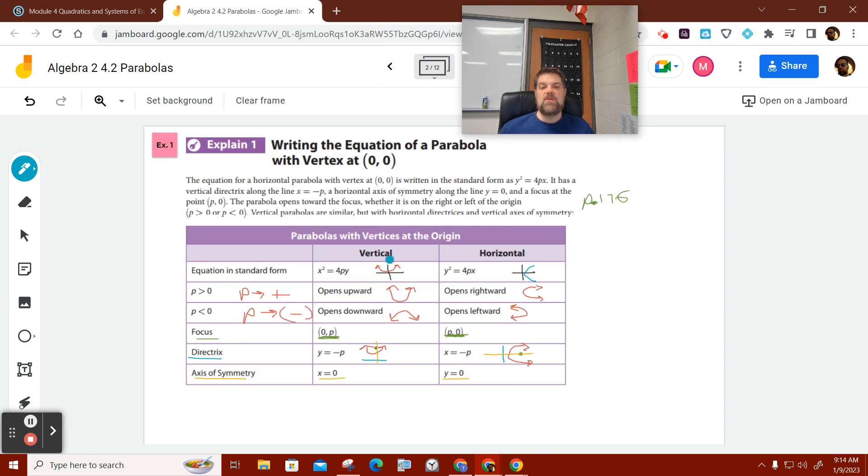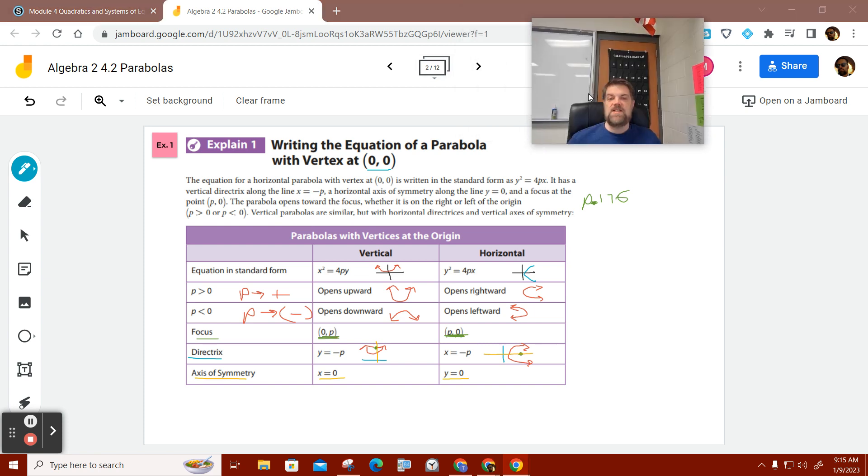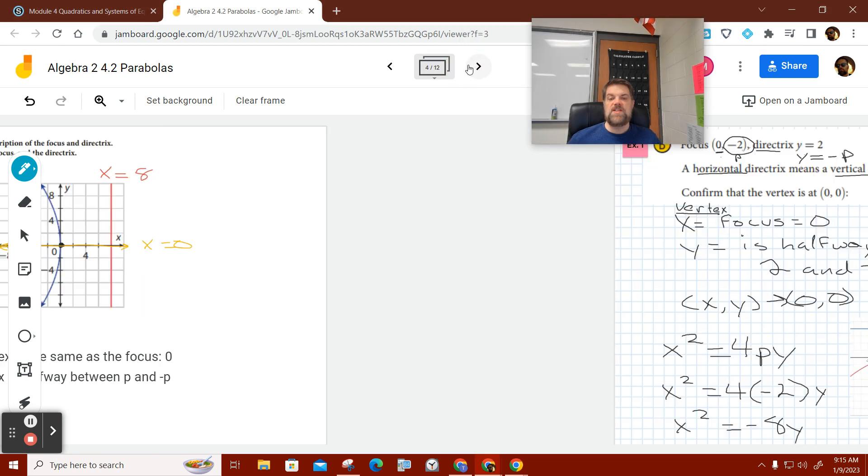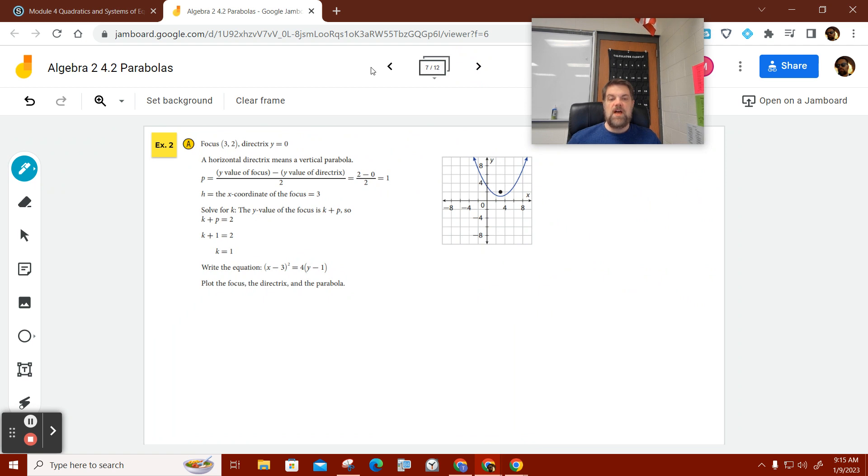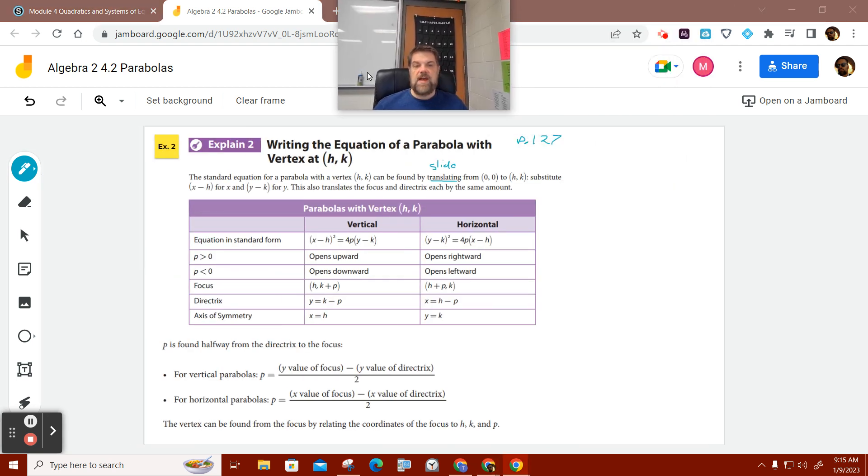What we talked about last time was writing a parabola with a vertex at zero, zero. And based on the information we were given, we had to determine if it was a vertical parabola or a horizontal parabola. But notice that in all of those examples, the vertex was through the origin. And so what we're discussing now is what does it look like when we move the vertex away from the origin? Well, it changes things slightly.